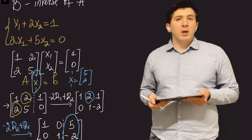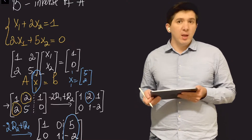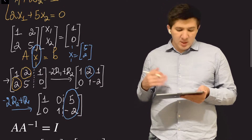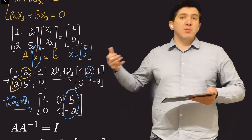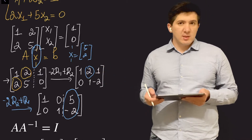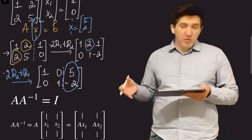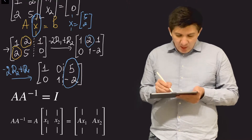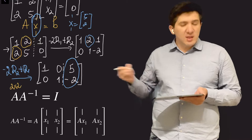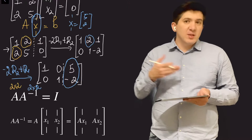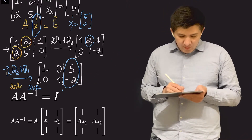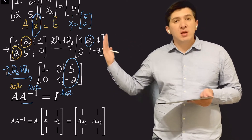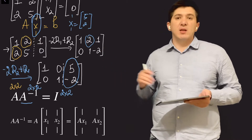The reason I showed you this system-solving algorithm is that we need it to find the columns of the inverse matrix. The inverse A⁻¹ is defined so that A times A⁻¹ equals the identity. For a 2×2 matrix, both A⁻¹ and the identity are 2×2, so A⁻¹ has two columns. I want to find those columns one at a time.